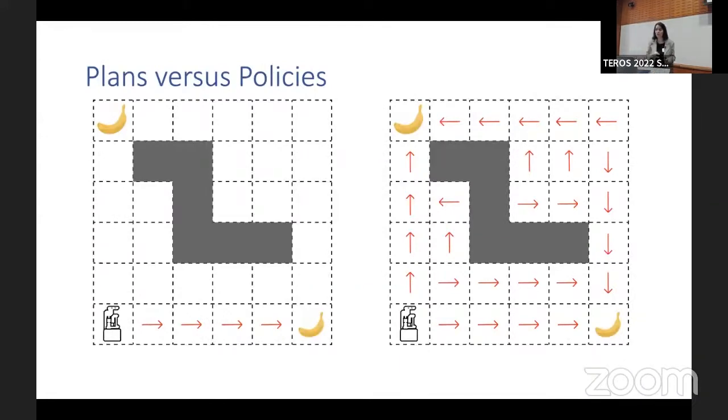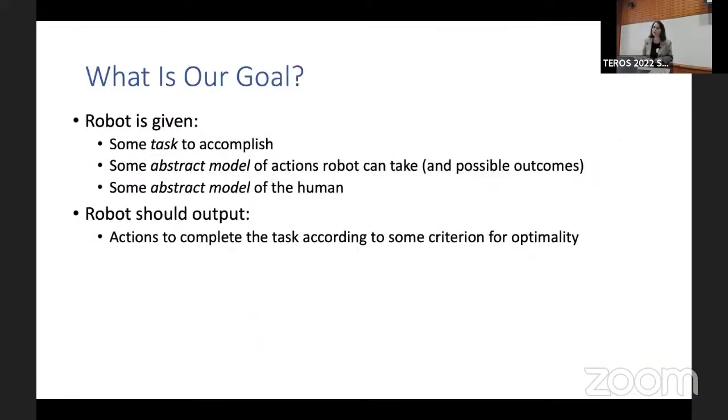And here, let me make sure that we all understand the difference between plans and policies. Plan is what I show on the left. You have a way to go from your initial to your goal. Policy is a very different thing. For policy, you want to know what to do under many different circumstances. And in this case, when you have an uncontrollable human, you want to go towards policies if you want to have a better understanding of what could possibly happen in your environment.